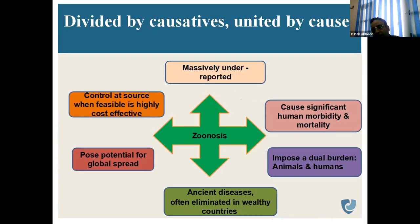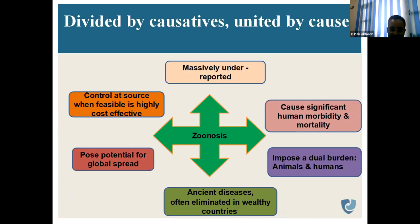Zoonosis is massively underreported. Most cases don't get reported. They cause significant morbidity and mortality and impose a heavy burden on both animals and humans. They pose potential for global spread. Control at source, when feasible, is highly effective. Some of these diseases have already been eliminated in wealthier countries.